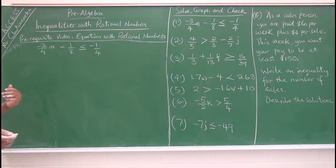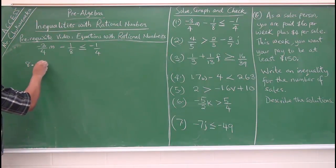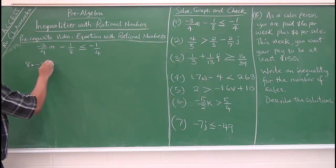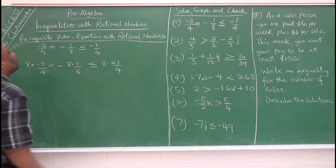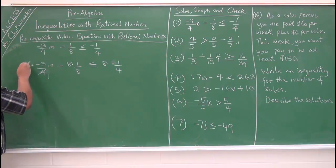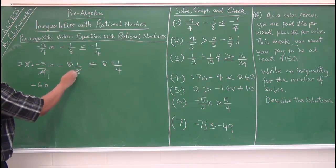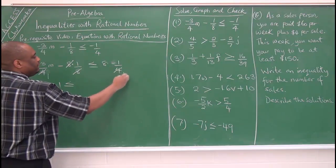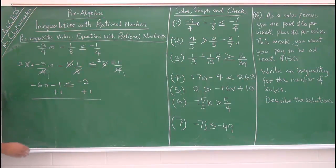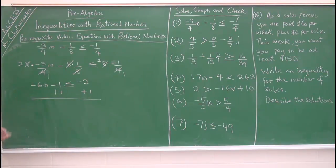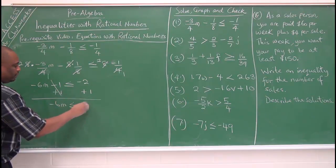First, find the LCD. The LCD of 4 and 8 is 8. We use 8 to multiply all terms: 8 times negative 3m over 4, minus 8 times 1 over 8, is less than or equal to 8 times negative 1 over 4. Simplifying: 4 into 8 is 2, so 2 times negative 3 is negative 6m. Then 8 into 8 is 1, giving minus 1 is less than or equal to negative 2. Add 1 to both sides to get negative 6m is less than or equal to negative 1.